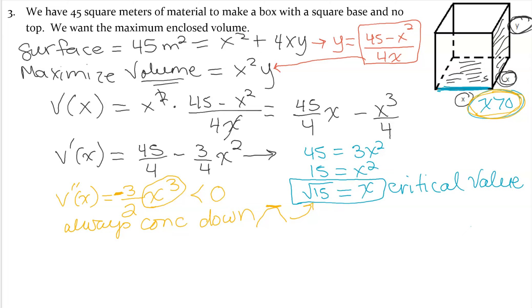Now the question didn't ask, but assuming we would want the dimension of that box, that means to go find x and y. So when x is square root of 15, y is 45 minus square root of 15 squared, which is 15, divided by 4 times square root of 15.